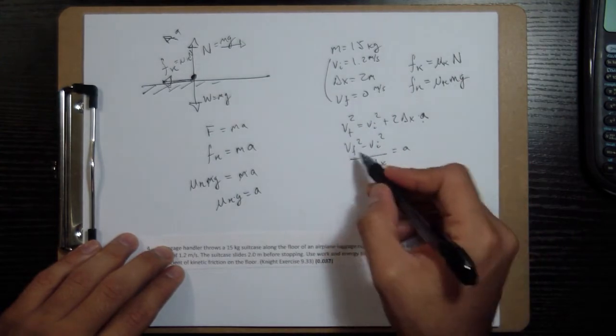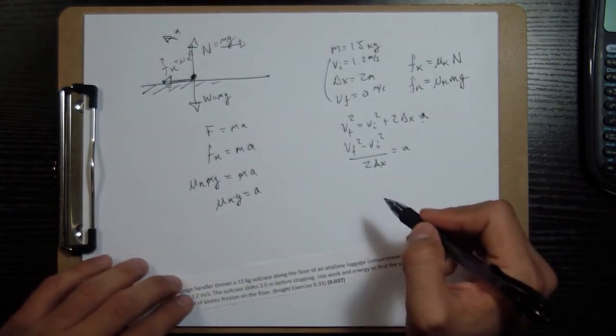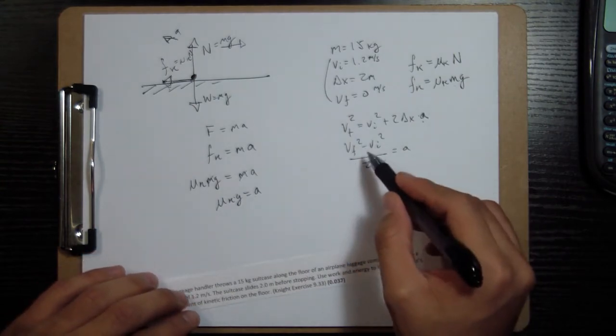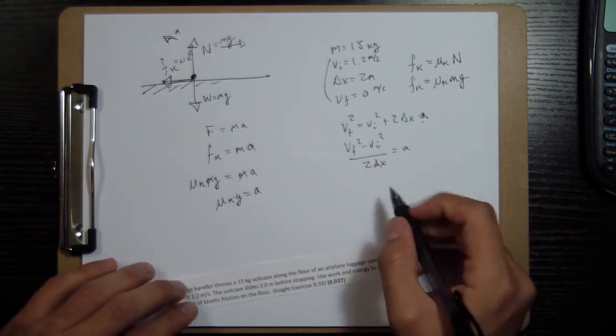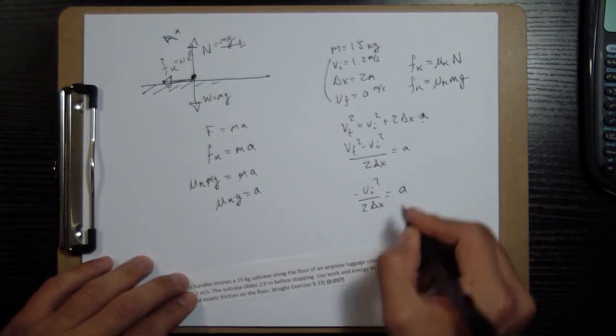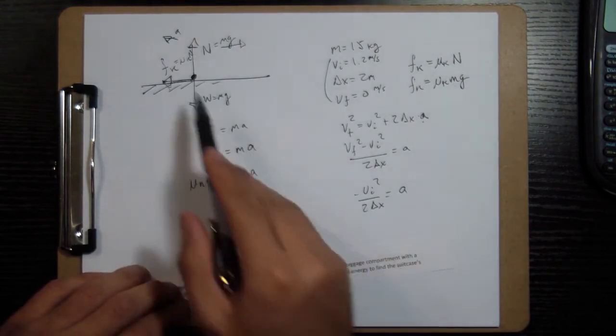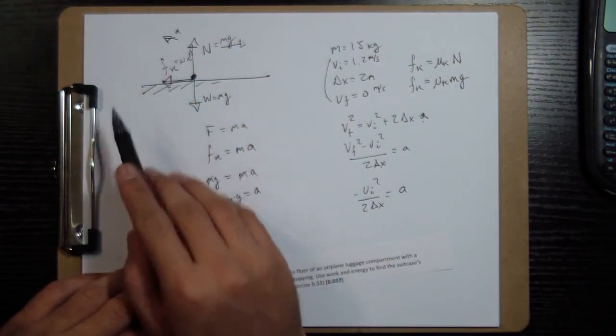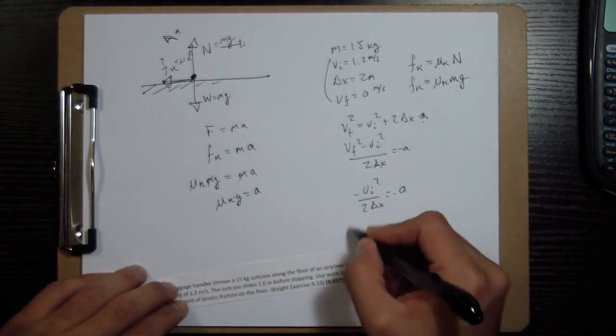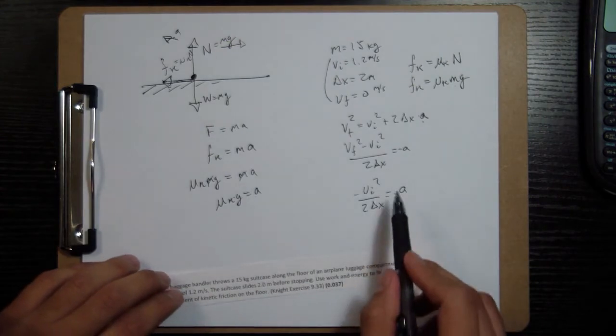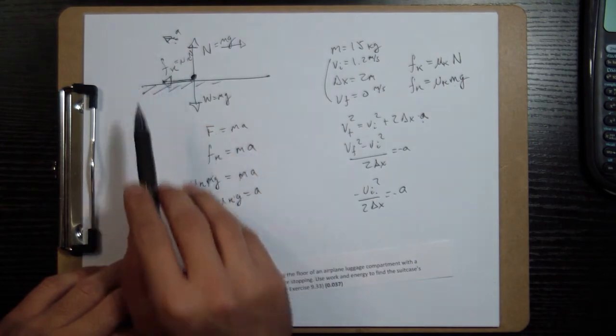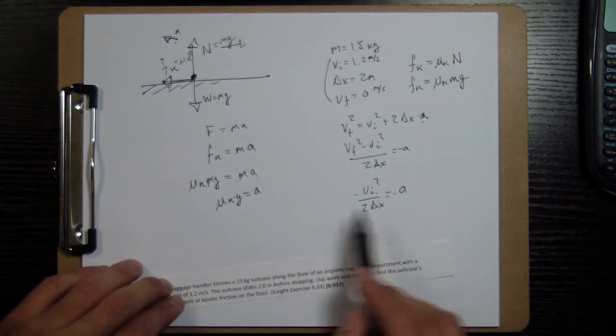And in this case, v final squared is 0. And so we'll have negative v i squared over 2 delta x is equal to my acceleration. Now I already took into account the negative sign by making the acceleration in this direction. So I'm going to take the positive one. Really over here, I should have negative a. So the negative sign is being taken care of by the fact that we had motion positive this way, and I made a going this way. So that's why the negatives didn't work out there.